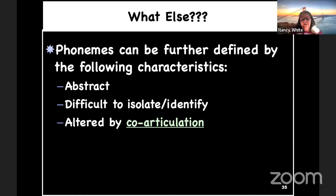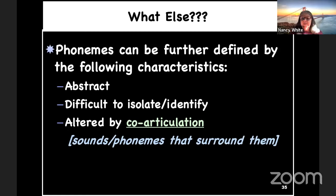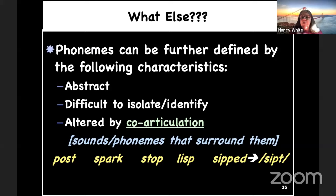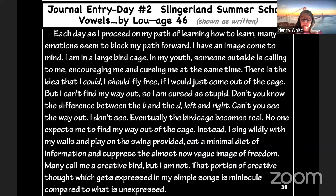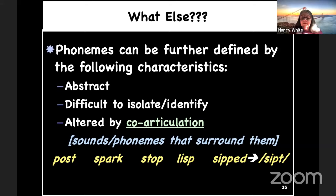Phonemes can be altered by co-articulation, which means the sounds or phonemes that surround them or where they occur in a word. Say 'post' and feel for the P phoneme. Say 'spark' and also feel for the P. Try 'lisp' and 'sipped.' Each of those words has the phoneme P, but the way it feels is not exactly the same. It's still the phoneme P and not any other phoneme, but it is affected by where it occurs in the word and the phonemes that come before or after it.